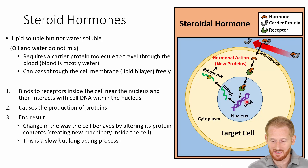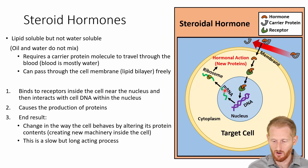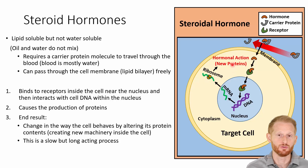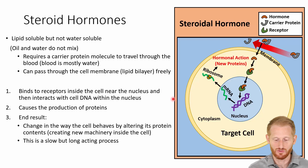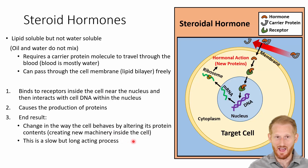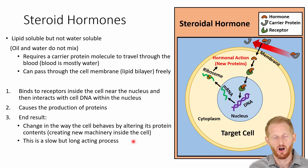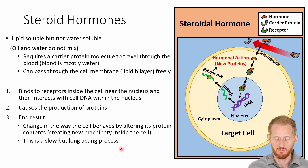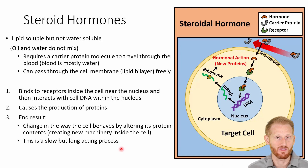Once it acts on the DNA, it activates it to produce messenger RNA (mRNA), which comes out into the cytosol and interacts with ribosomes to create new proteins. This process essentially creates new machinery within the cell, which then causes the cell to work in a certain way. This process is longer and slower because we're creating new machinery, but it is longer-acting and has major impacts on cell function.